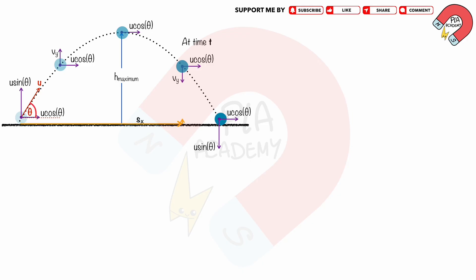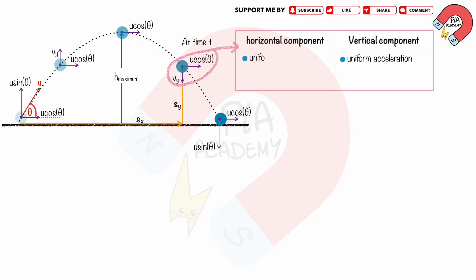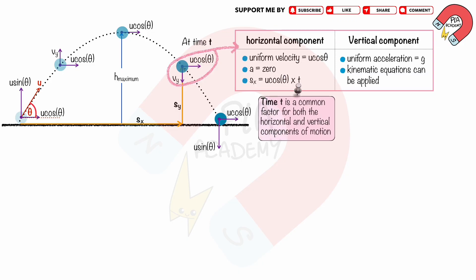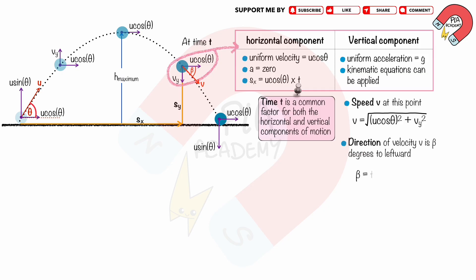When the ball reaches the ground, the vertical velocity is the same magnitude as at the start but in the opposite direction, and horizontal velocity stays the same. At time t, the ball has traveled a distance s_x horizontally and s_y upward. We can break its motion into horizontal and vertical components as shown in the table. The time t is a common factor for both components. The speed v at this time is found by combining horizontal and vertical velocities using the Pythagorean theorem, and its direction is at angle beta to the horizontal.